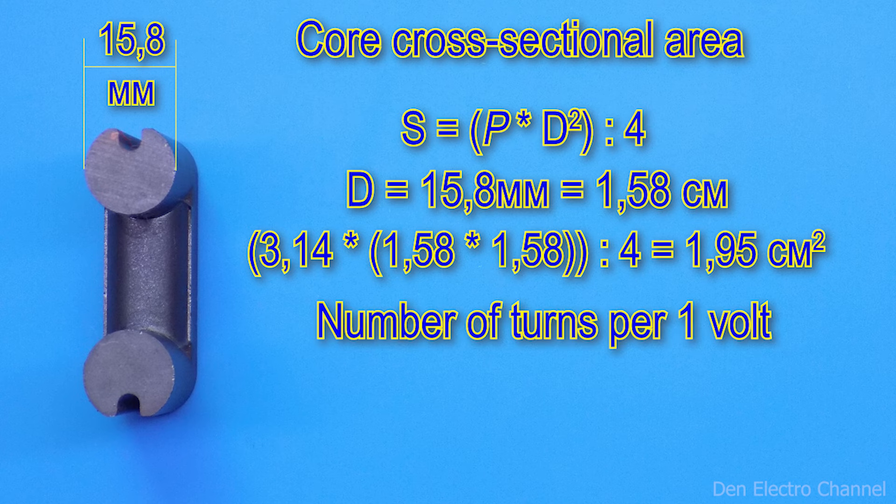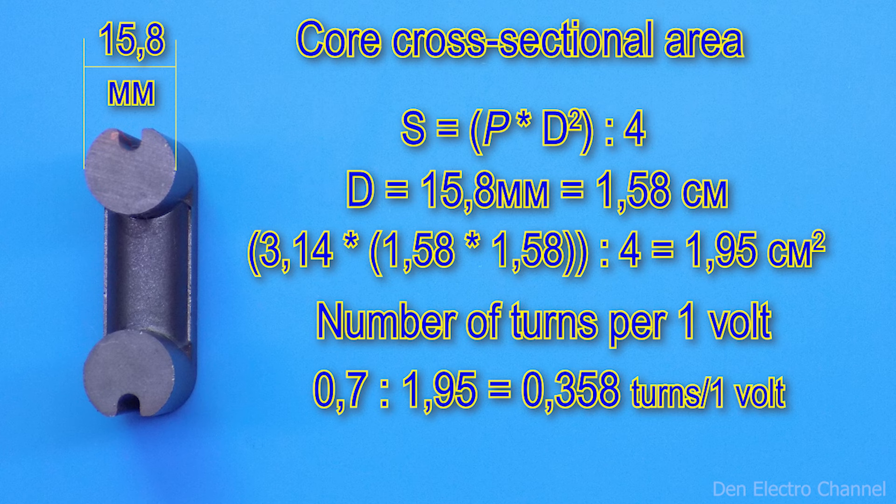To find out how many turns you need to wind per 1 volt, we will use the following form. Let's take a constant coefficient of 0.7 and divide it by the core area. The resulting figure was 0.358.